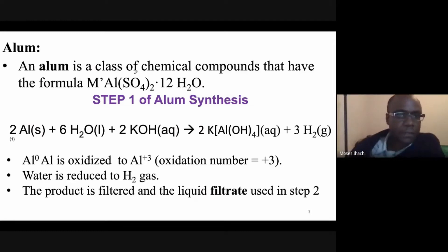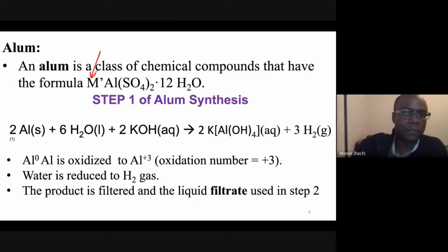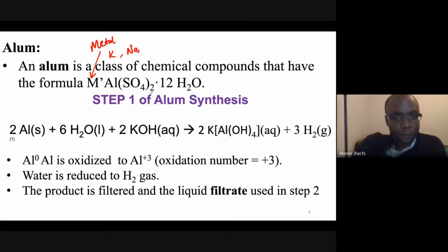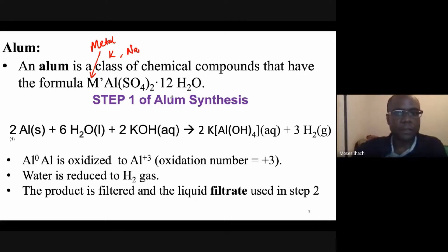Alum is a class of chemical compounds having the formula M, where M stands for a metal depending on what base you use. If you use potassium hydroxide, M will be K. If you're using sodium hydroxide, M will be Na. Step one of the synthesis will involve reacting aluminum with potassium hydroxide dissolved in water.